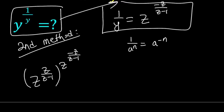We have an exponential being raised to another power, so that means we multiply the exponents. That's going to become z to the power z over z minus 1 as the inner exponent, times z to the power negative z over z minus 1 as the second exponent.